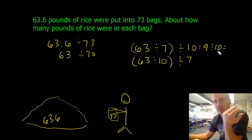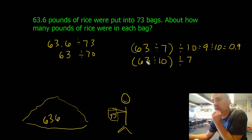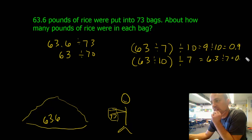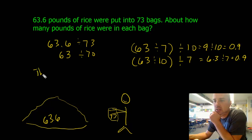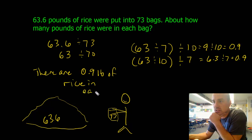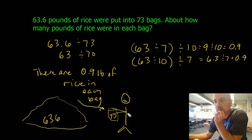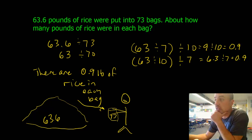So how many pounds of rice are in each bag? There are 9 tenths of a pound of rice in each bag. That makes sense — each person gets just under a pound.